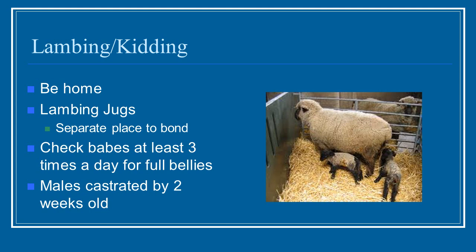As part of your production scheduling during lambing and kidding season, one main thing is that you want to be available. Be sure you don't have any plans to go out of town, and that your work schedule allows you to stay close to your pregnant animals. They will need to be checked periodically throughout the day. Set up your lambing jugs — a small separate enclosure — for a day or two to make sure moms and babies bond, and that the little ones are getting enough to eat. Check the babies at least three times a day for full bellies. Males will need to be castrated by two weeks old, so make sure you have the time for all that incorporated into your schedule.